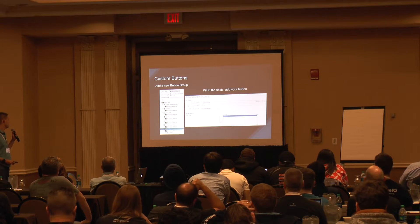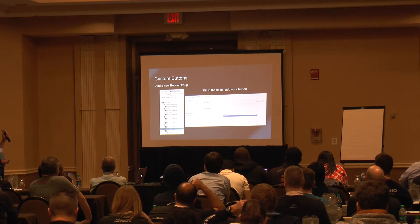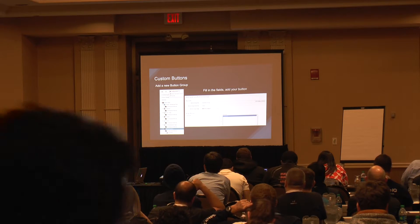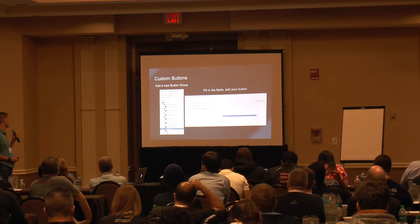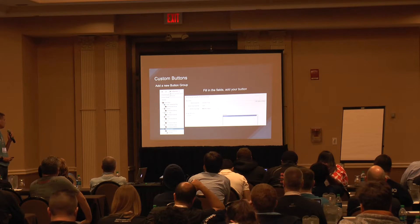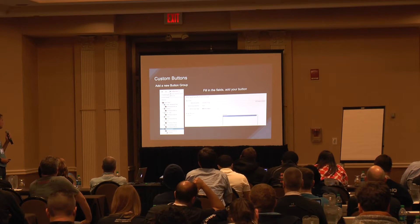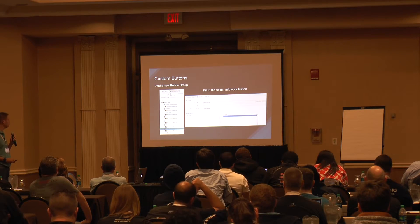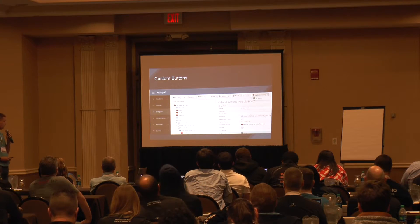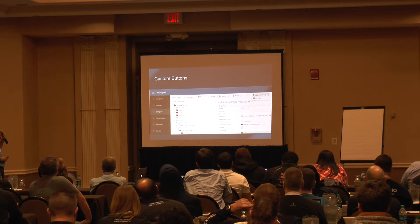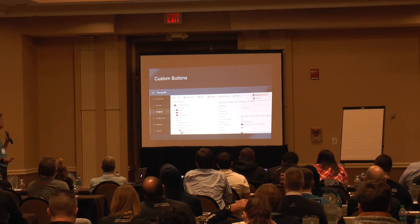Hit Save and you're brought back to the button panel. Select VM and Instance, go to the Configuration dropdown again, add a new button group, give it a name, then move your button from Unassigned to Selected and hit Save. From there you can go to the Compute menu under VMs and Templates and you'll see your button.